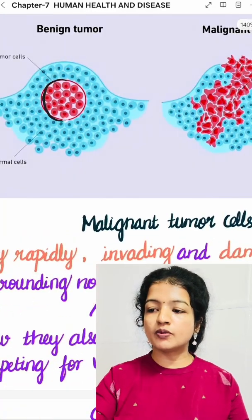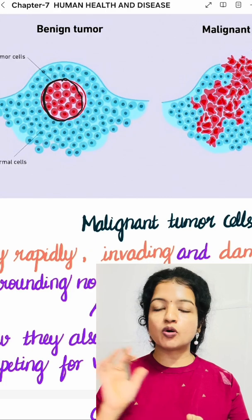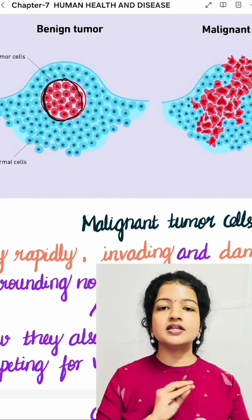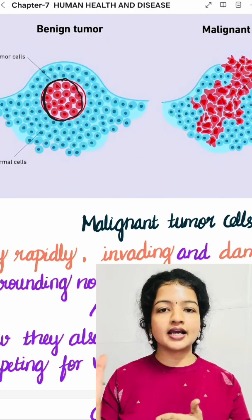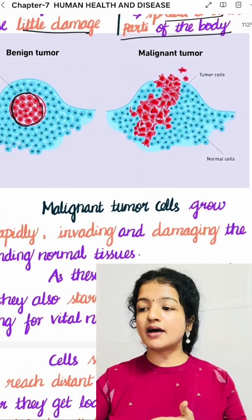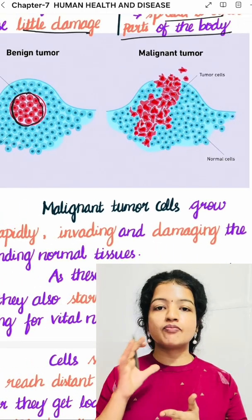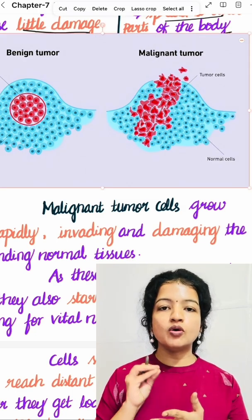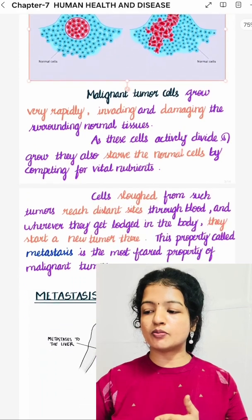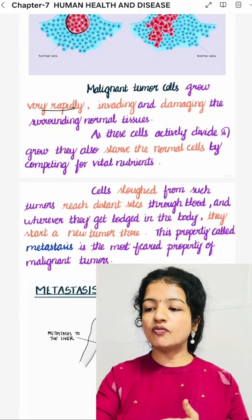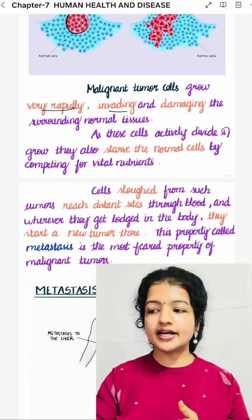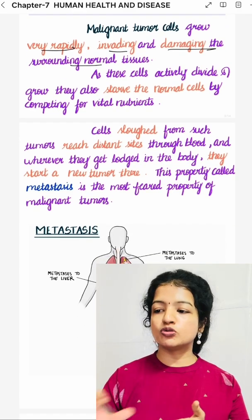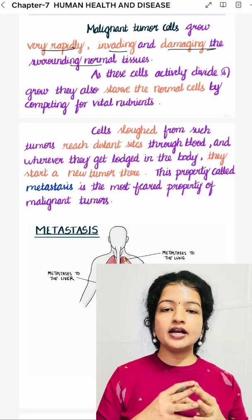See this picture — a benign tumour will be confined to its original location, and surrounding normal tissue will be caused damage. A malignant tumour is the mass of proliferating cells; it damages surrounding normal tissue and also spreads to other parts of the body. Malignant tumours grow very rapidly, invading and damaging the surrounding normal tissues.